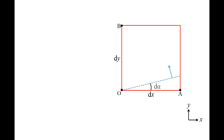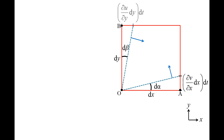The bottom side of the fluid element, OA, rotates a very small angle d alpha due to the gradient of the y component of the velocity in the x direction. Similarly, the left side of the fluid element, OB, rotates a small angle d beta due to the gradient in the x component of the velocity in the y direction. The distance traveled by point A relative to point O is partial v partial x dx, multiplied by the time dt. The distance moved by point B relative to point O is partial u partial y dy, multiplied by the time dt.